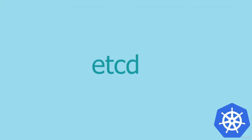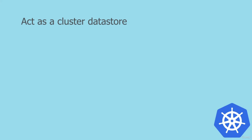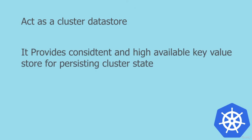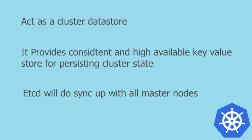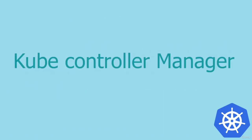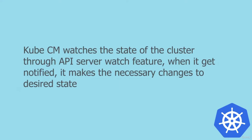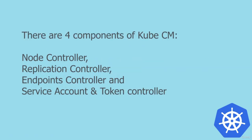Another component is etcd. etcd acts as a cluster data store, providing a consistent and highly available key-value store for persisting cluster state. It provides information like what pods and nodes are running in the cluster. If you have multiple master nodes, etcd will synchronize data between them. The kube-controller-manager watches the state of the cluster through the API server and makes necessary changes attempting to move the current state toward the desired state.